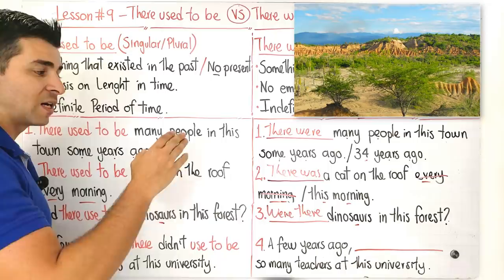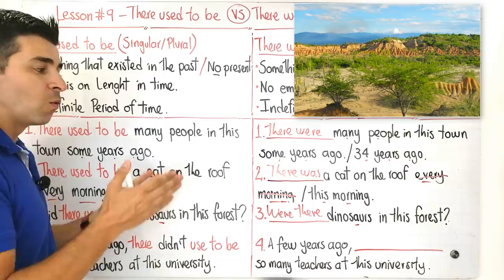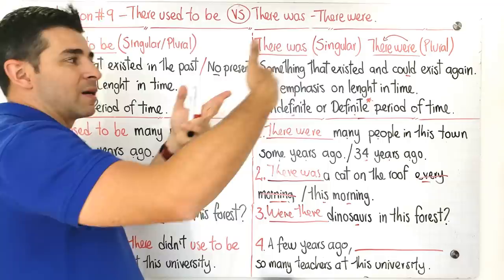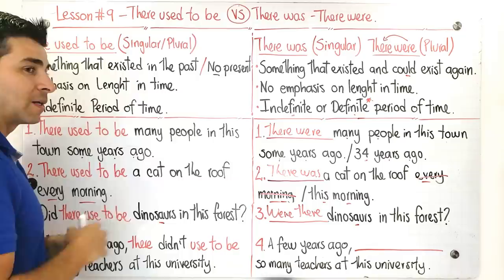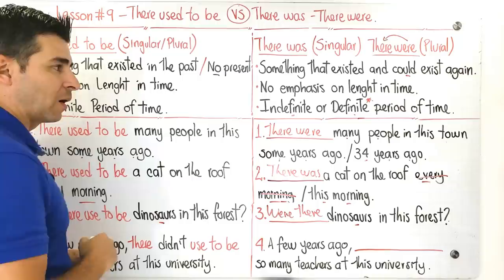This wouldn't be used in this form. It's a correct sentence - were there dinosaurs in this forest? When we use it this way, we're basically talking about the dinosaurs being there right now and that they could return later. But since that's not the case, basically the tendency is to use there used to be because they stayed in the past and that's it. They're not going to appear again. Well, who knows, but it's very rare that that would happen. So basically we're going to go with the logic.